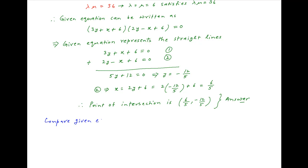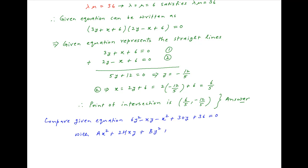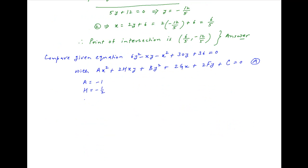To compare the given equation of the pair of straight lines 6y² - xy - x² + 30y + 36 = 0 with the standard equation ax² + 2hxy + by² + 2gx + 2fy + c = 0, denoted equation A, we equate coefficients of like terms and get: a = -1, h = -1/2, b = 6, g = 0, f = 15, and c = 36.